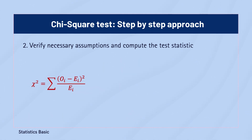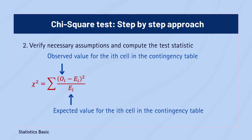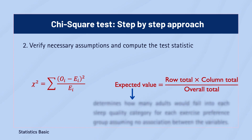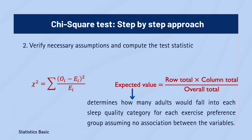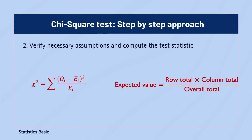To calculate the chi-square test statistic for independence, we first need to calculate the expected frequencies using the following formula, which determines how many adults would fall into each sleep quality category for each exercise preference group assuming no association between the variables.